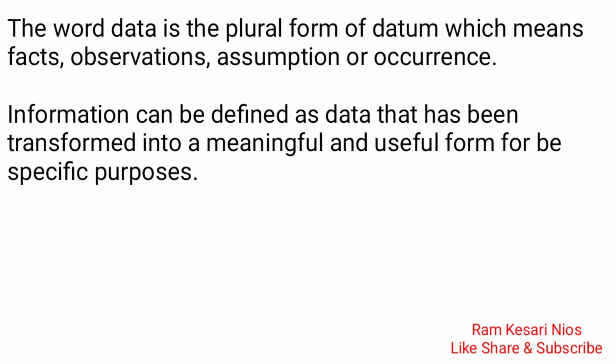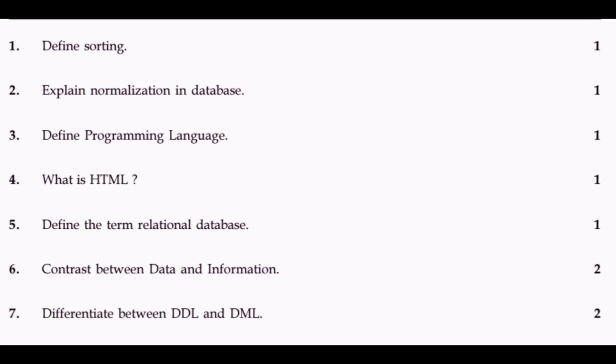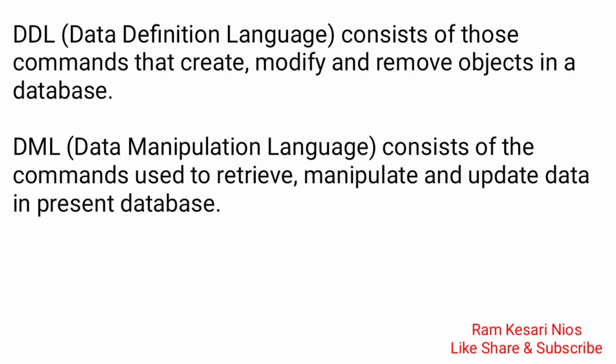Question 6: Contrast between data and information. The word data is the plural form of datum, which means facts, observations, assumptions, or occurrences. Information can be defined as data that has been transformed into a meaningful and useful form for specific purposes. Question 7: Differentiate between DDL and DML. DDL, Data Definition Language, consists of commands that create, modify, and remove objects in a database. DML, Data Manipulation Language, consists of commands used to retrieve, manipulate, and update data in the database.